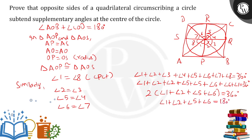Angle 1 plus angle 2 is angle AOB, and angle 5 plus angle 6 is angle COD. Both together form 180 degrees, meaning they are supplementary angles. This is exactly what we needed to prove, and we are done with the proof. This is how you need to proceed with the question.